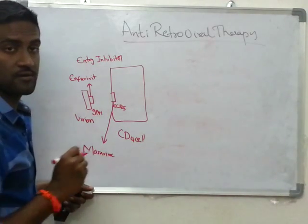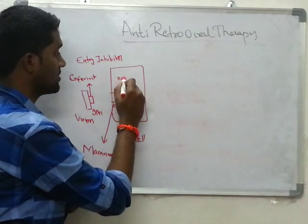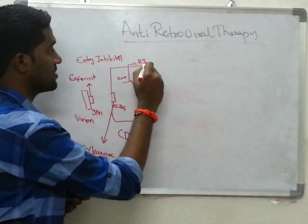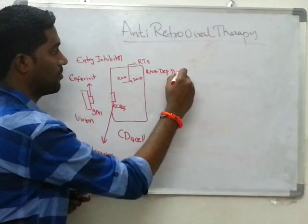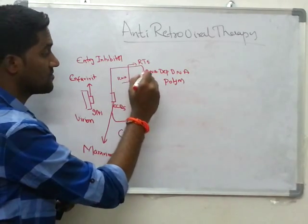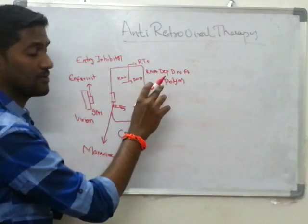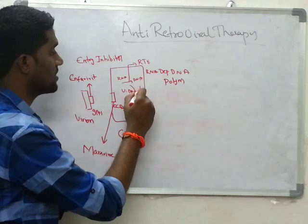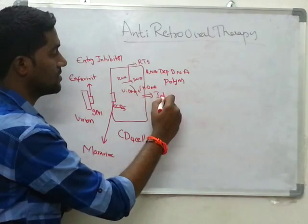If the virion has entered into the cell, it has to get its RNA converted into DNA. This is through reverse transcriptase enzyme — it is RNA dependent DNA polymerase. Remember, reverse transcriptase enzyme is RNA dependent DNA polymerase, whereas RNA polymerase is DNA dependent RNA polymerase. Next, the viral DNA has to get integrated with the host DNA, and here integrase inhibitors function.